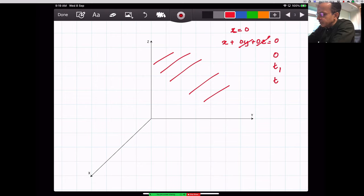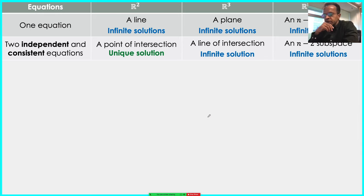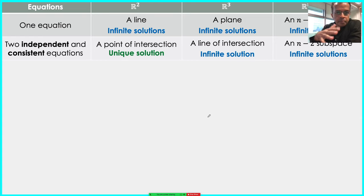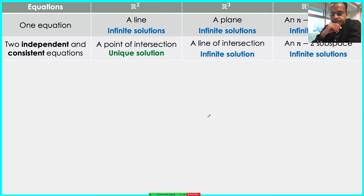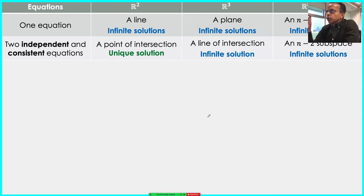For a more complicated equation like x plus y plus z equals some constant, it's still a plane but in a general orientation. One linear equation in R3 gives a plane. Extrapolating: in Rn, one equation gives a hyperplane — an (n-1)-dimensional subspace. Each equation takes away one degree of freedom: in R2, one equation constrains you to a line; in R3 to a plane; in Rn to an (n-1)-dimensional subspace.